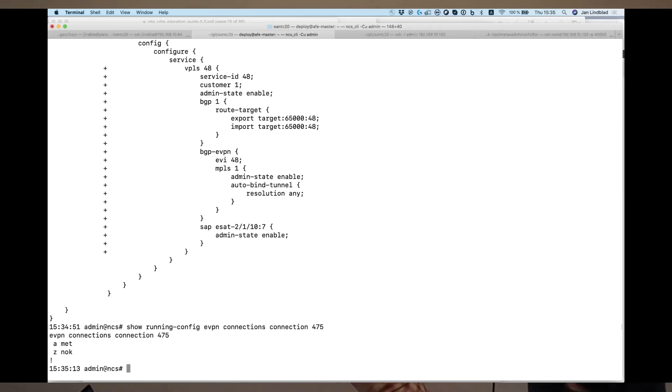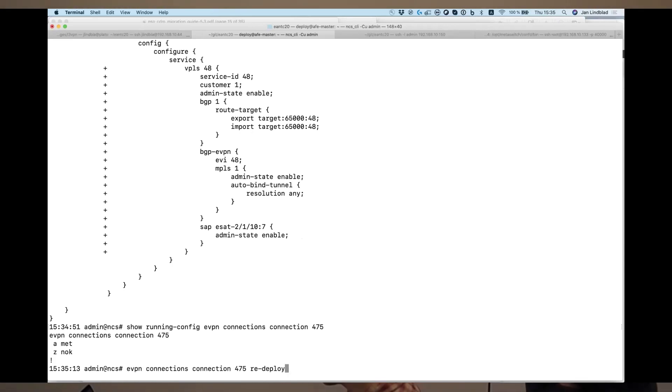And if we look here, this is the actual intent that we're utilizing here. And it simply says, create an eVPN connection from MetaSwitch to Nokia.